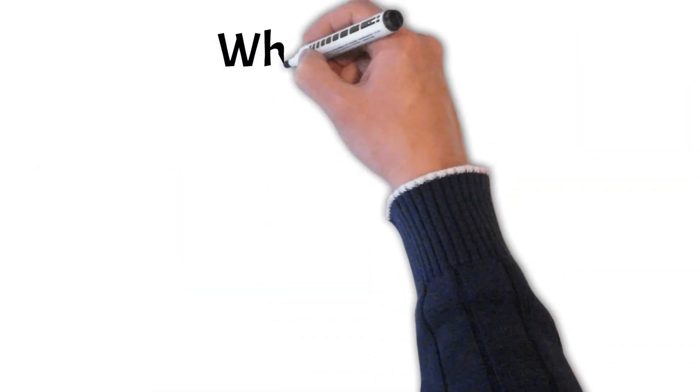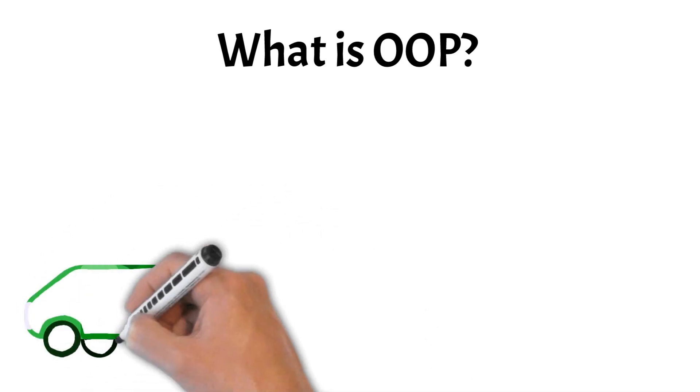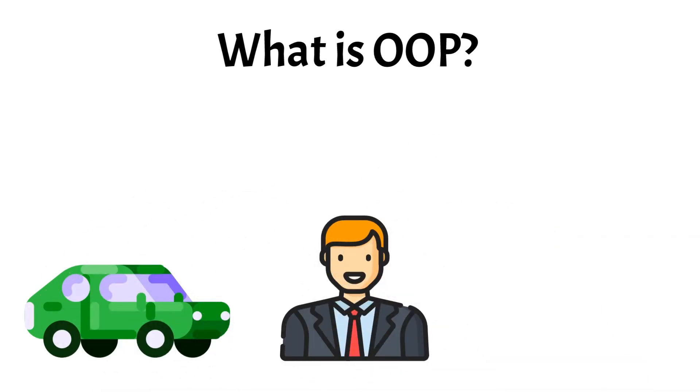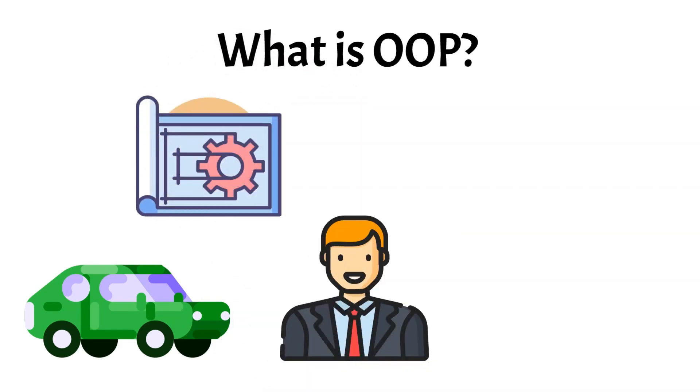First, let's briefly take a look at what OOP is. Object-oriented programming, or OOP, is a way of organizing code by using objects to represent real-world things like a car or a person. These objects are created from classes which are blueprints that define what the objects can do and what information they can hold.